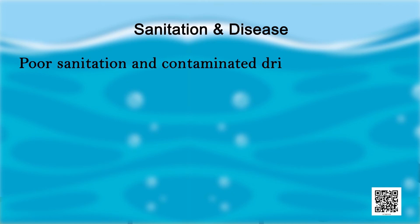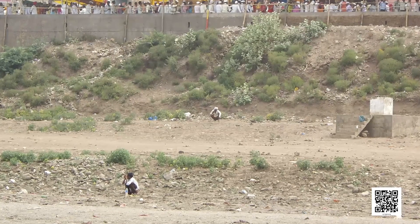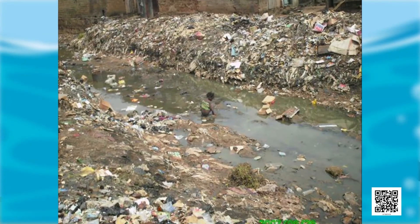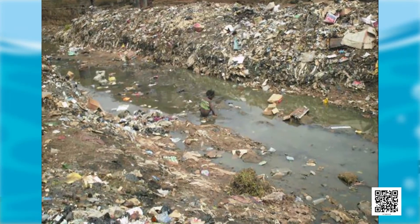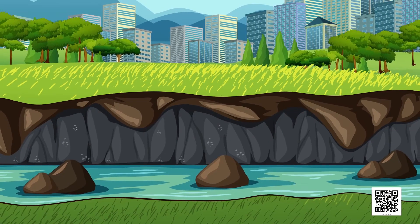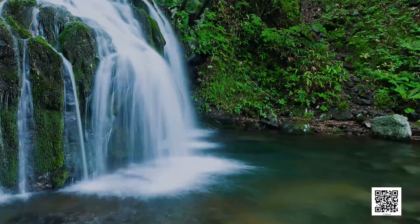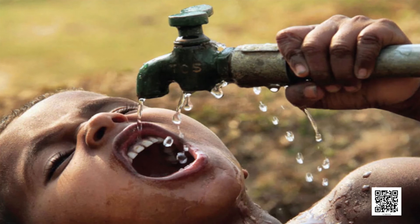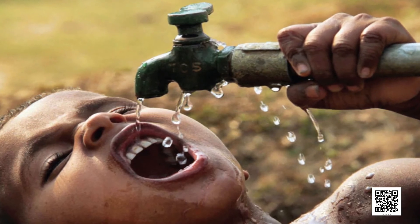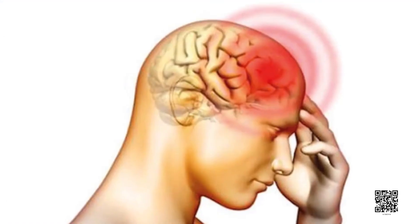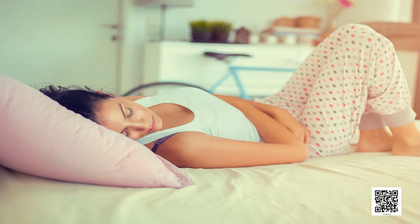Sanitation and disease. Poor sanitation and contaminated drinking water is the cause of a large number of diseases. Untreated human excreta is a health hazard. It may cause water pollution and soil pollution. Both the surface water and ground water get polluted. Ground water is a source of water for wells, tube wells, springs and many rivers. Thus, it becomes the most common route for water-borne diseases. They include cholera, typhoid, polio, meningitis, hepatitis and dysentery.